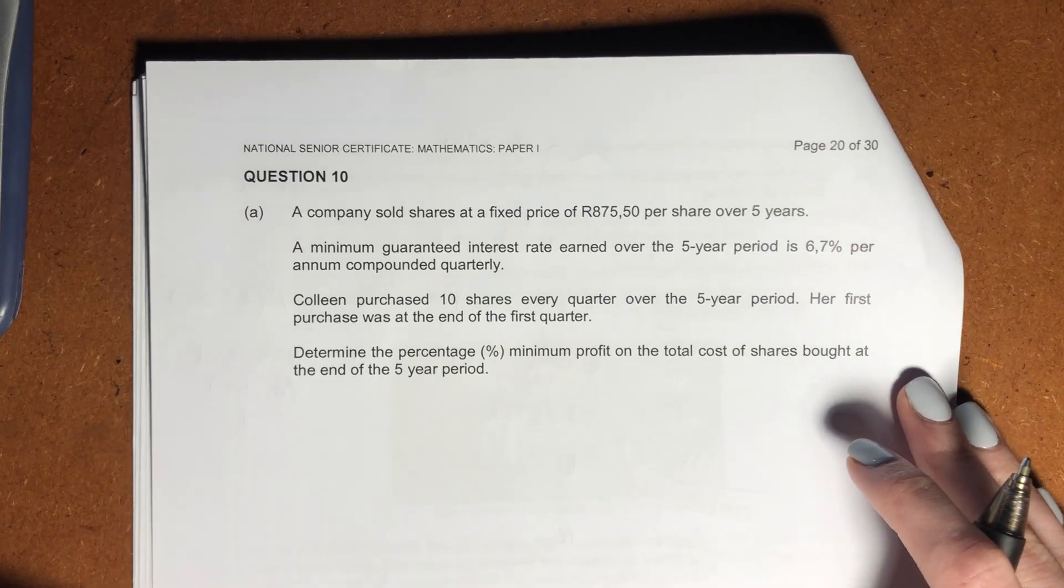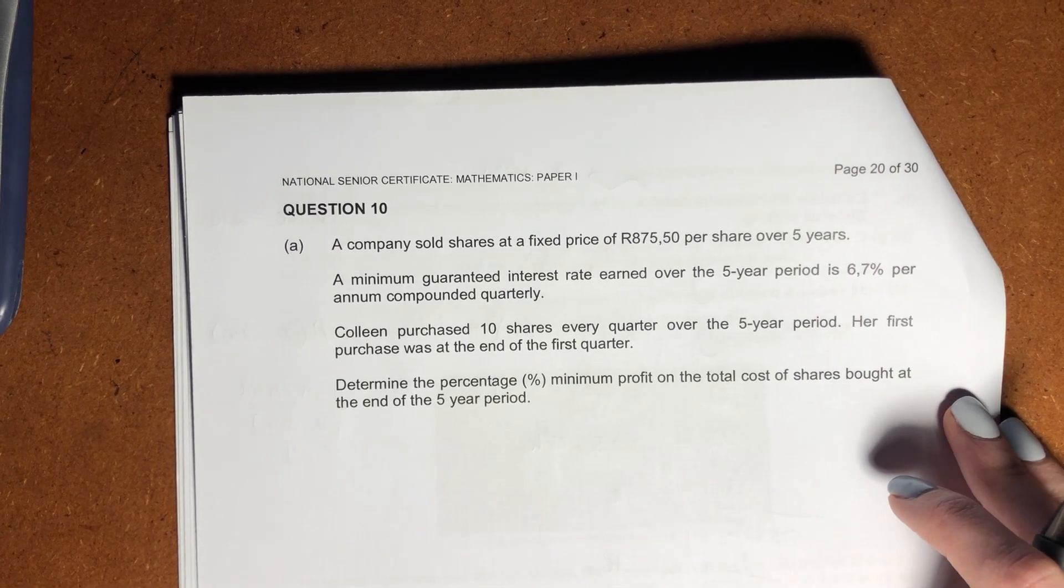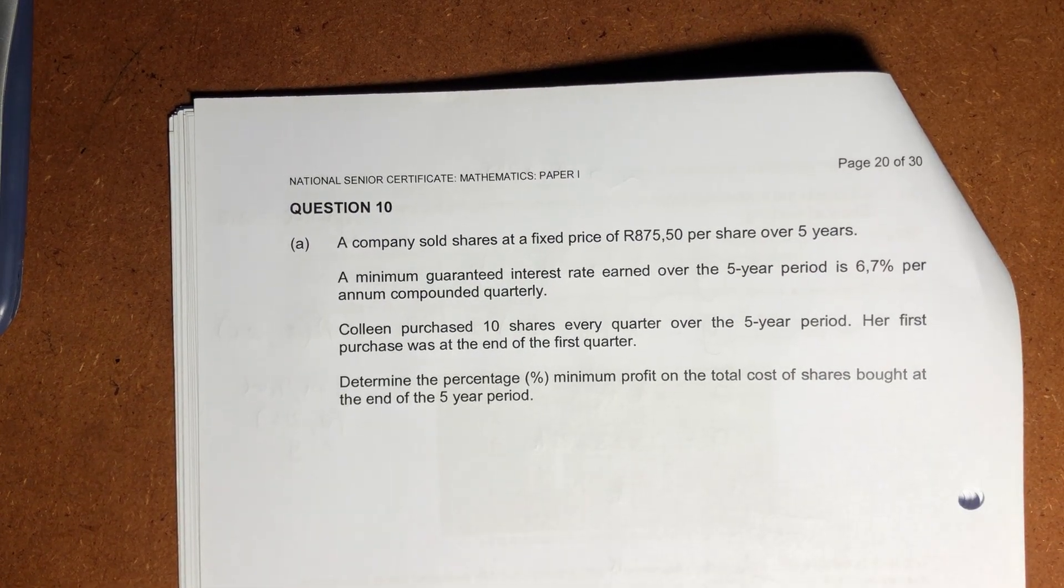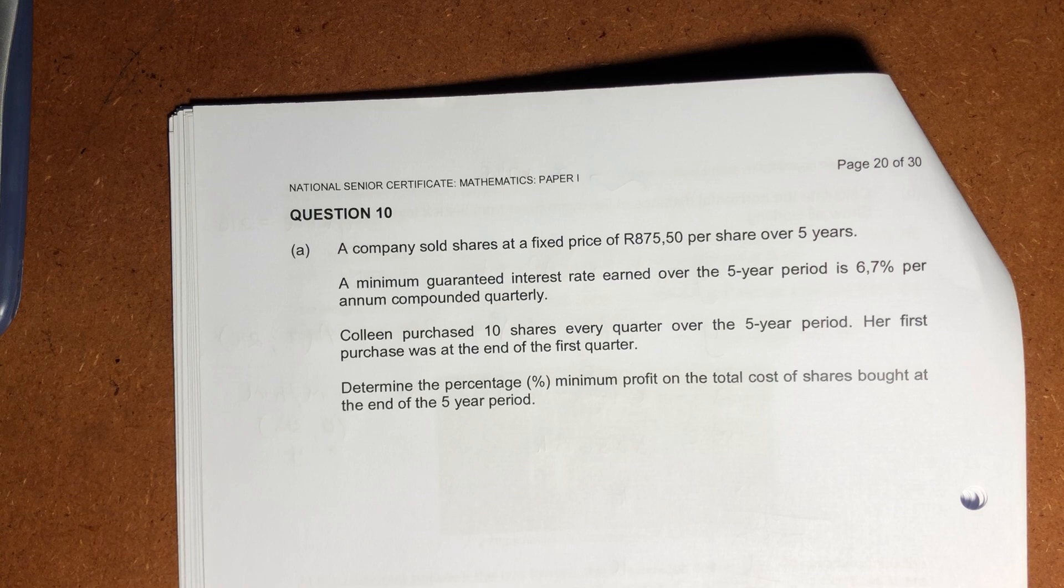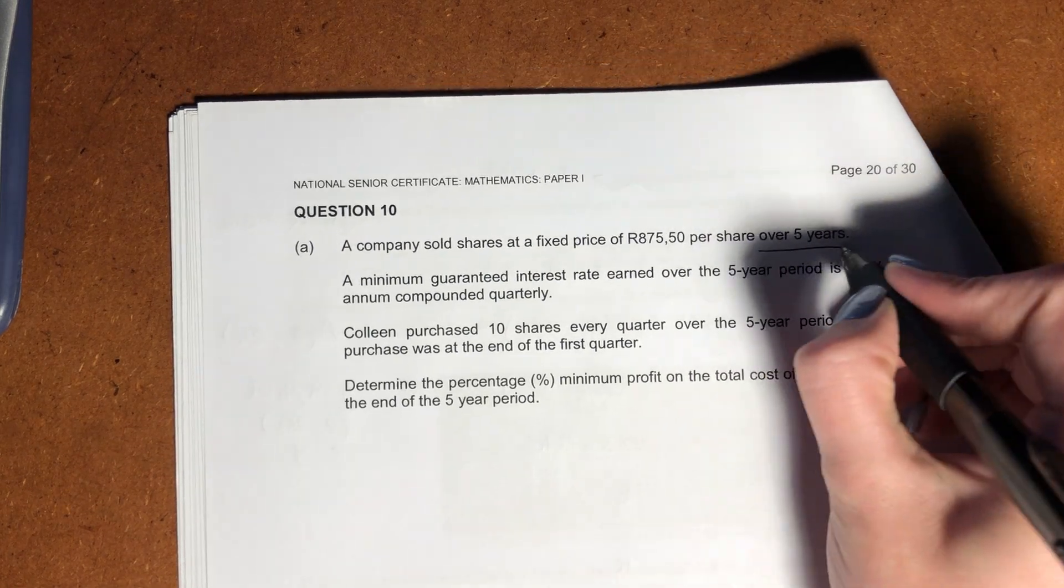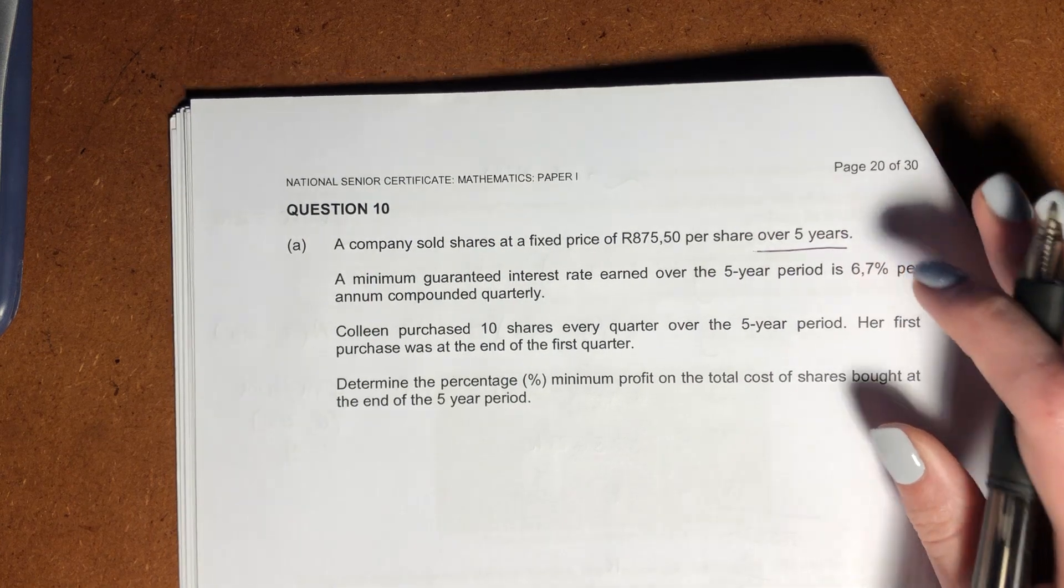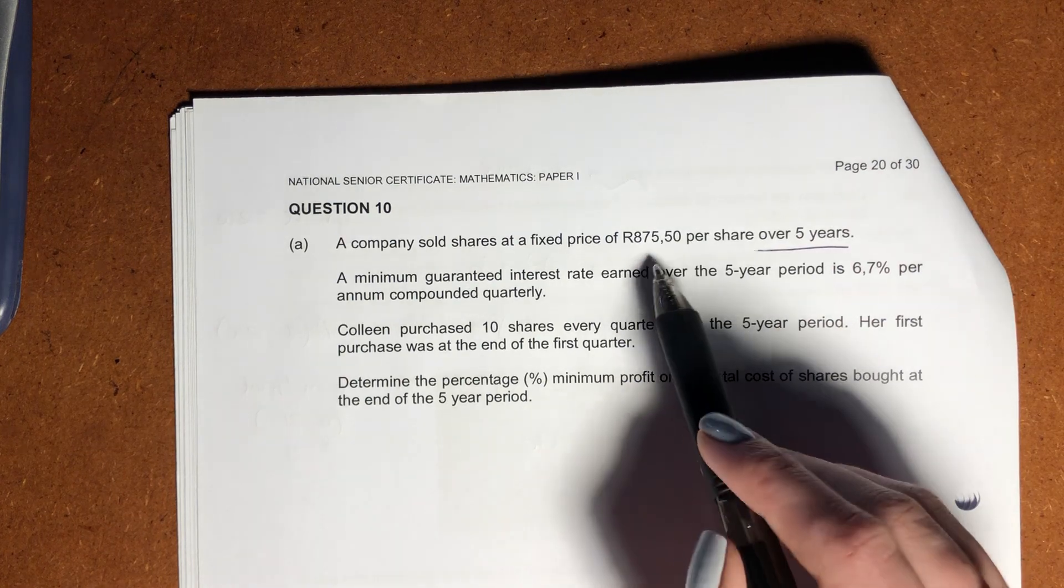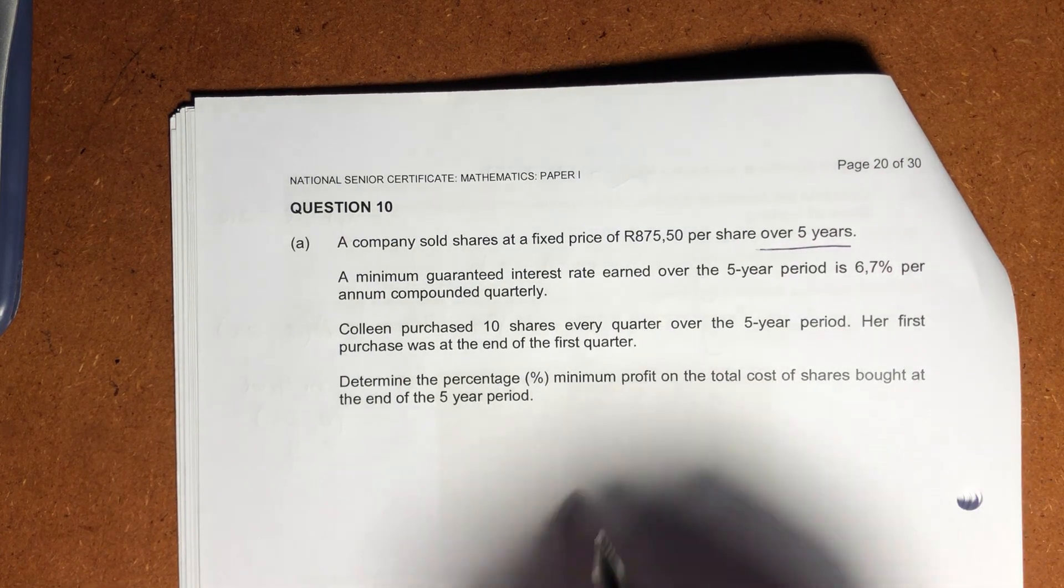Okay, question 10, and on to some financial maths. This is actually quite a tricky question, but we'll go through it in a lot of detail. So firstly, it says a company sold shares at a fixed price of R875.50 per share over five years. So what's important here is that you need to note that the price is staying the same over the five years, important.